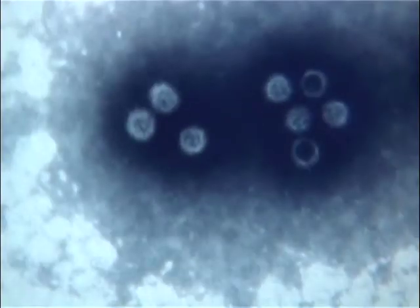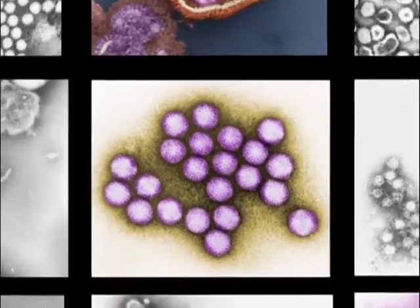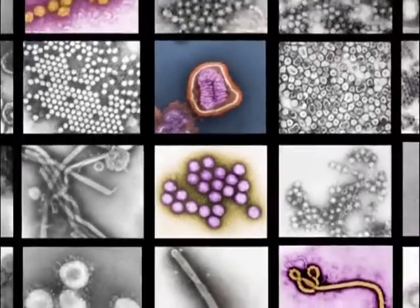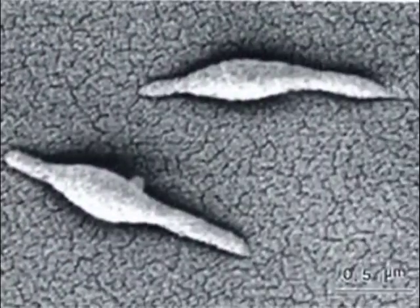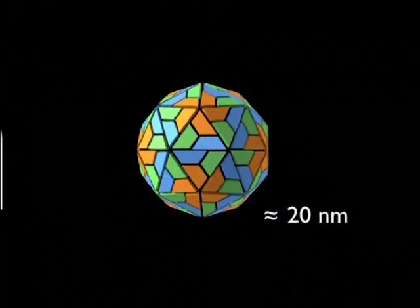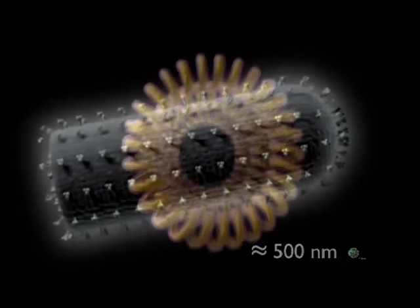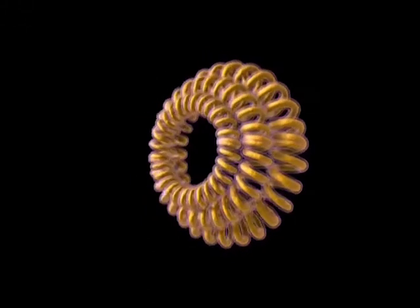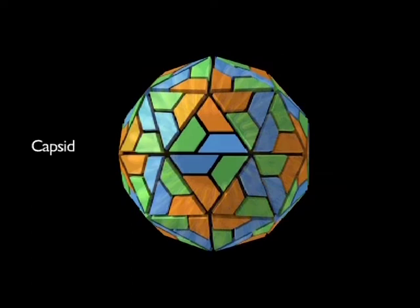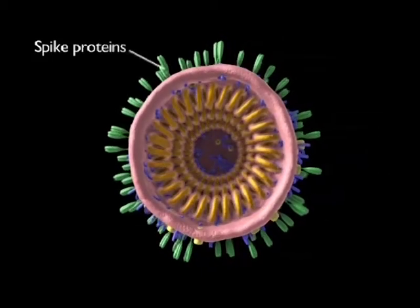It became clear that viruses vary a great deal in size and shape. Some viruses are even larger than small bacteria. Generally, they range from about 20 nanometres to over 500 nanometres. Structurally, viruses are genomic material surrounded by a capsid. In many cases, the capsid is covered by a lipid membrane, and in many viruses, spike proteins protrude from the membrane.